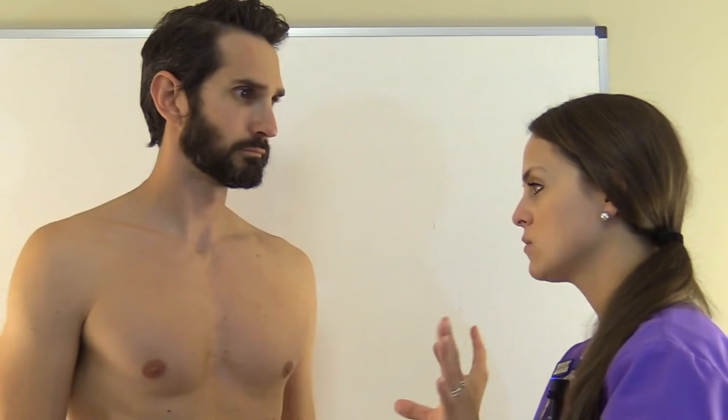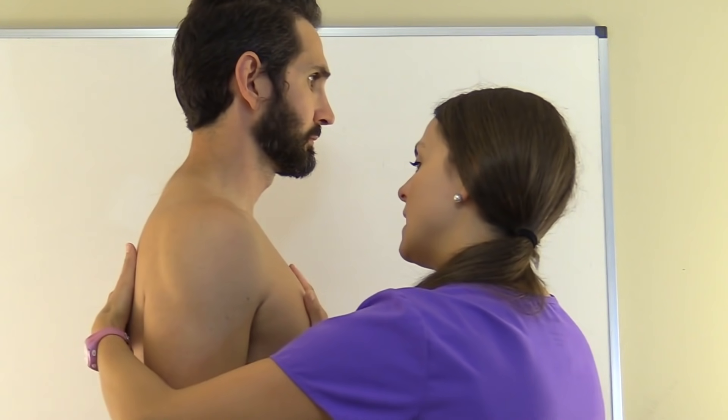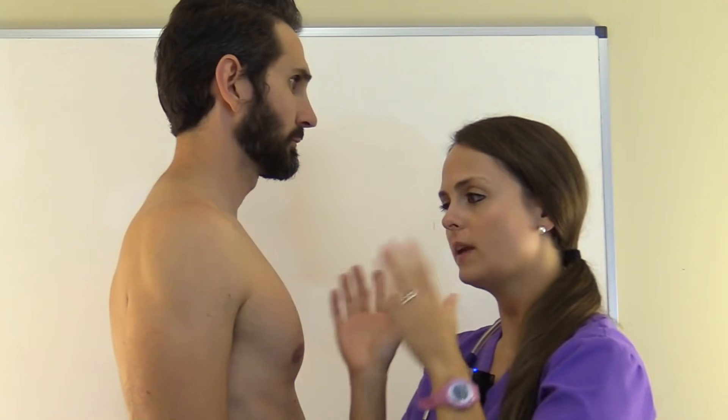We're going to inspect the chest. We're looking for any abnormalities like lesions or wounds. We're also inspecting the patient's effort of breathing — is it really labored? Are they using those accessory muscles to breathe? We're also looking at that anterior-posterior diameter. Turn to the side and you're looking for that barreled chest, which will be increased in patients with COPD.